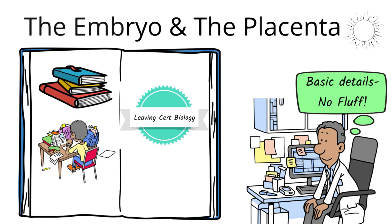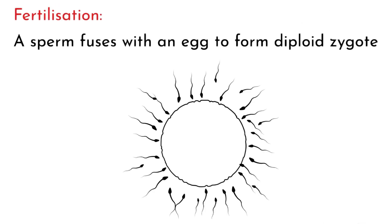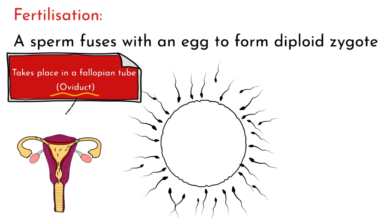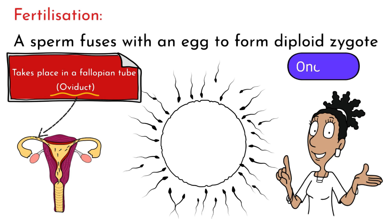It all commences with fertilisation. This is when the sperm, the male gamete, fuses with an egg, the female gamete, to form a diploid zygote, and this takes place in a fallopian tube or oviduct. It's important to recognise that the diploid zygote is a single cell — students often don't recognise that. It's one cell and it contains 46 chromosomes.